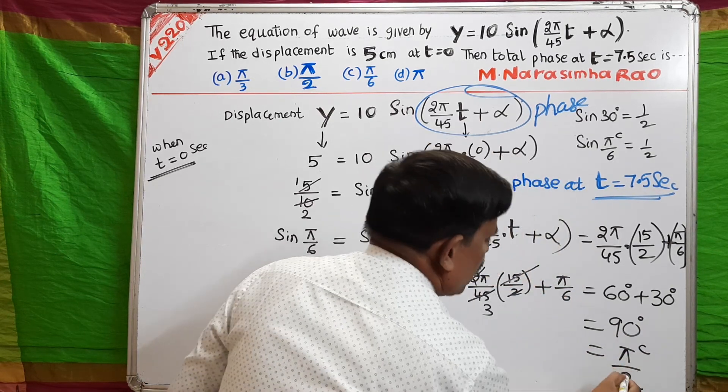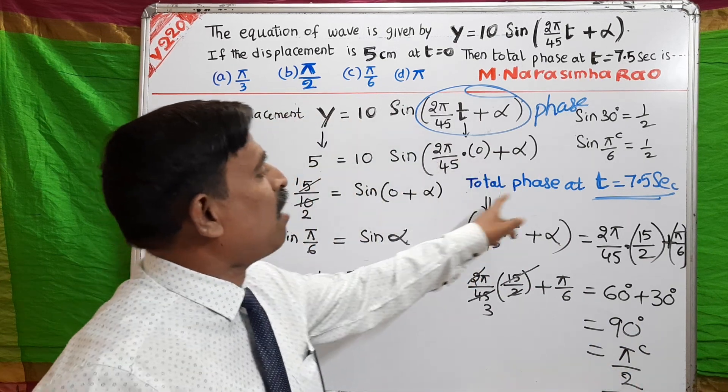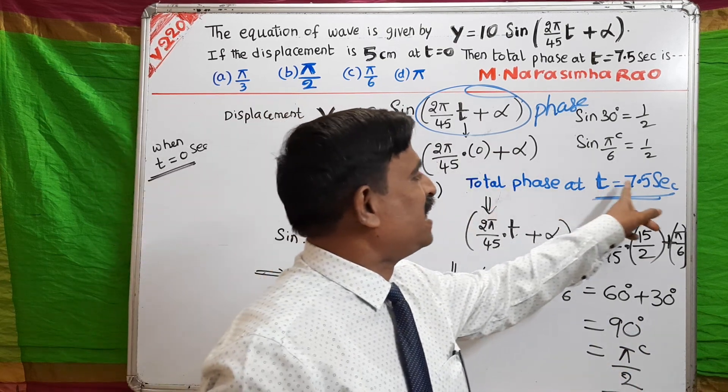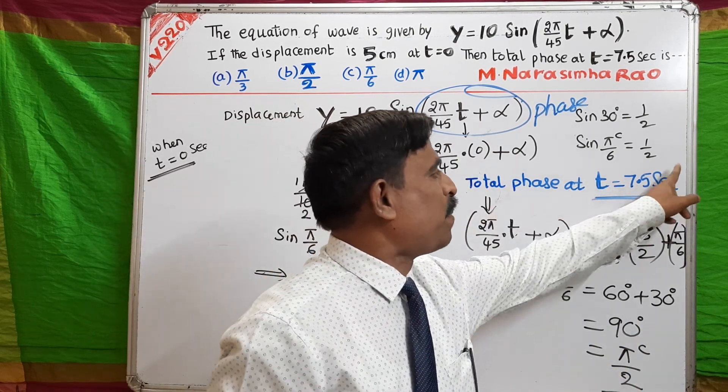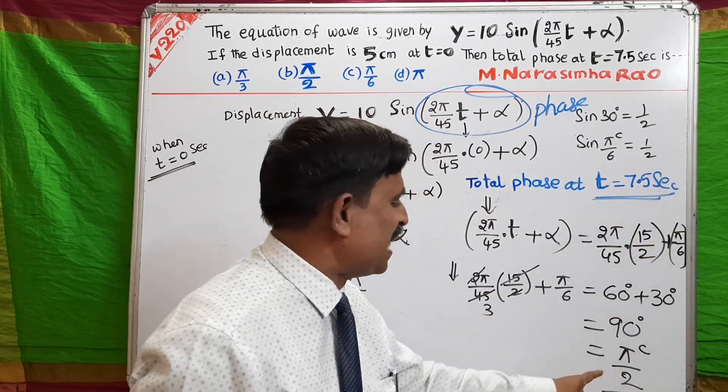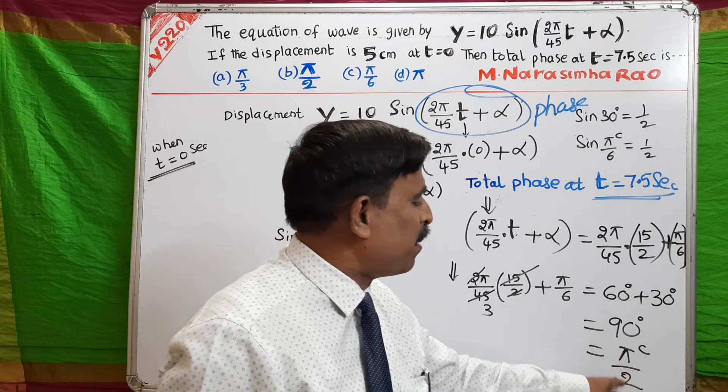Therefore, the total phase at t = 7.5 seconds is π/2 radians.